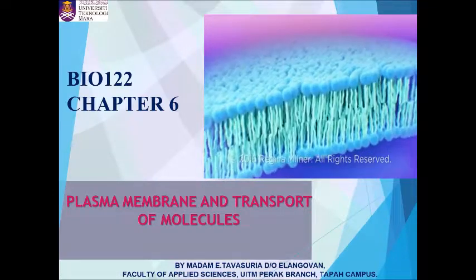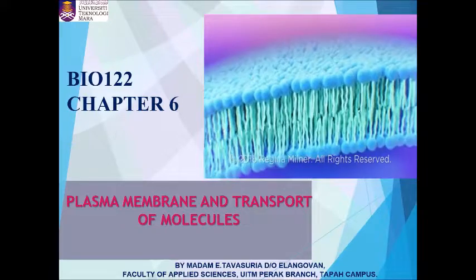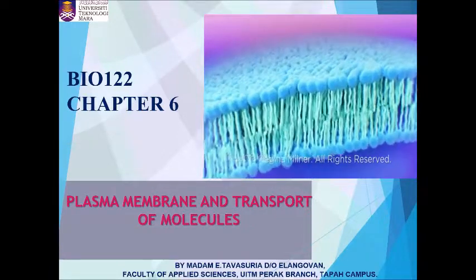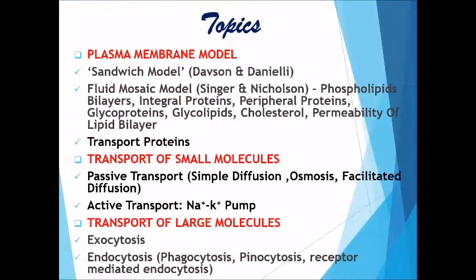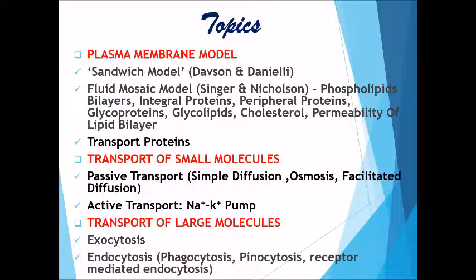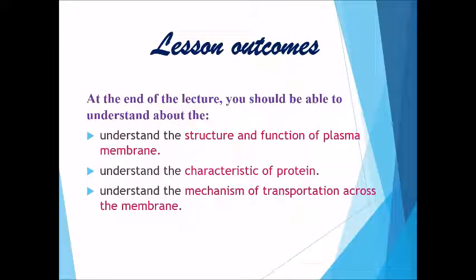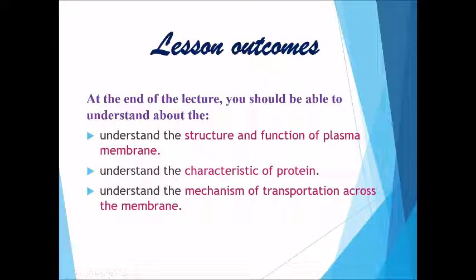Assalamualaikum and good morning everyone. Today we will learn chapter 6: Plasma Membrane and Transport of Molecules. In this topic you will learn about two types of plasma membrane models — the sandwich model and the fluid mosaic model — the transport proteins, the types of transport protein, and the transport of small and large molecules. By the end of the lecture you will understand the structure and functions of the plasma membrane, the characteristics of membrane proteins, and the mechanism of transportation across the membrane.